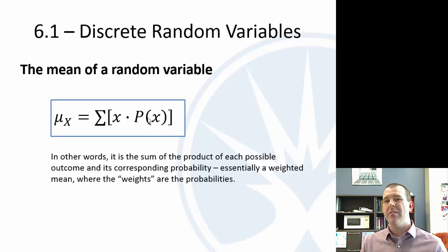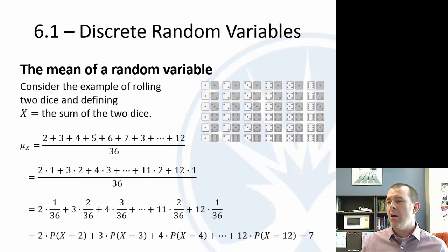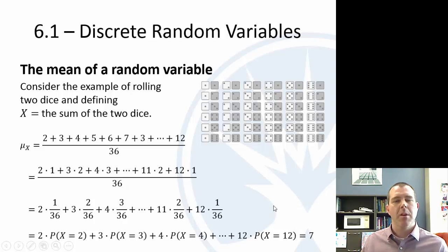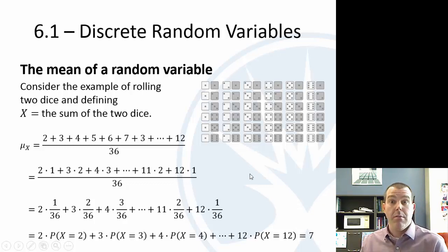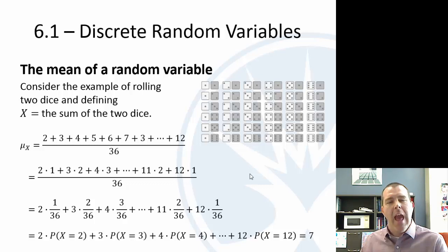What does this mean? What can we interpret from that? I didn't say I can expect a 7 every time — that's not what it means. Sometimes I'm going to get a 2, or a 12, or a 3, or an 8. But this is just in the long term: if I do this over and over and over again, the average result I can get is 7.